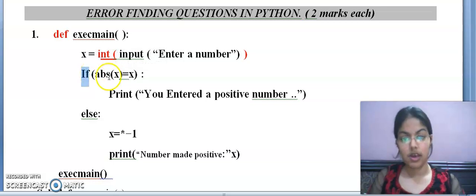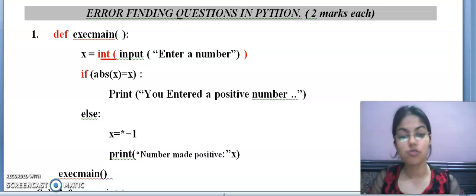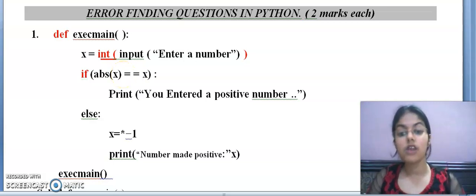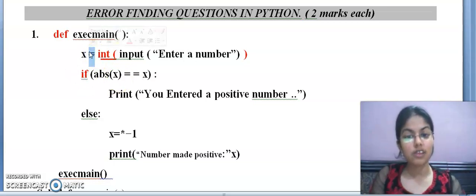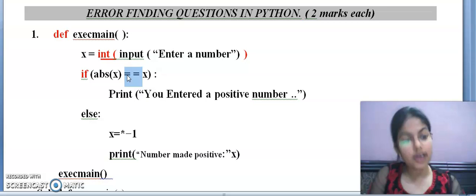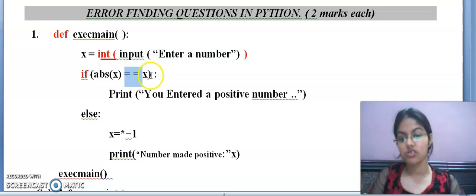The input function will return a string. But to find out the absolute value of any number, we need a value of integer type. So what I have to do here? Int function. This int function will convert the string value into integer value. Moving to the next line, if absolute of X equals to X. If is also a keyword, so both alphabets will be small.